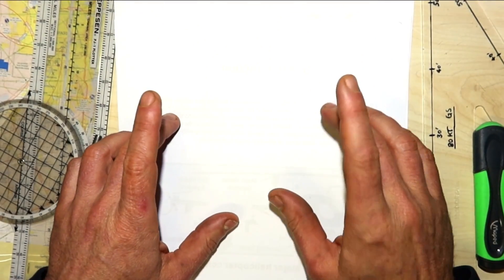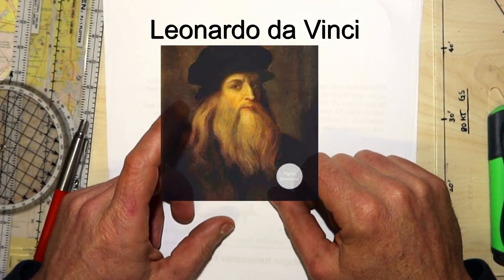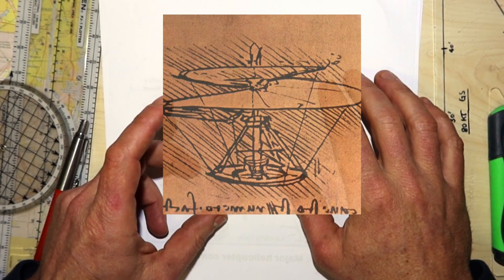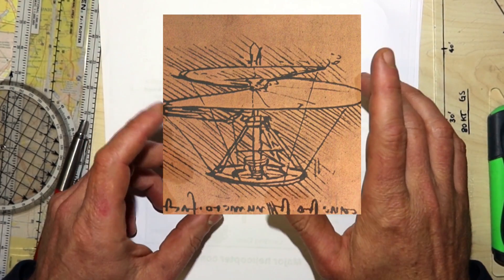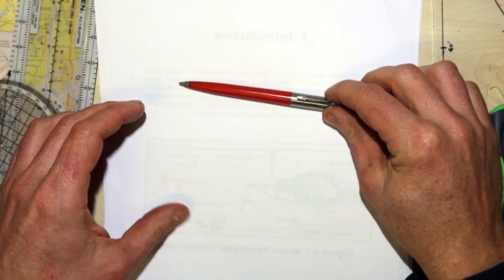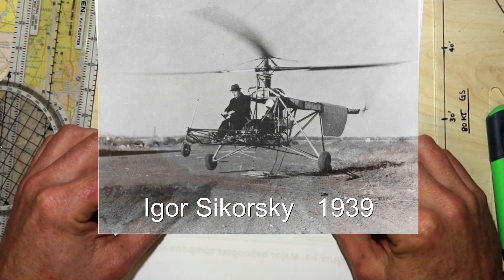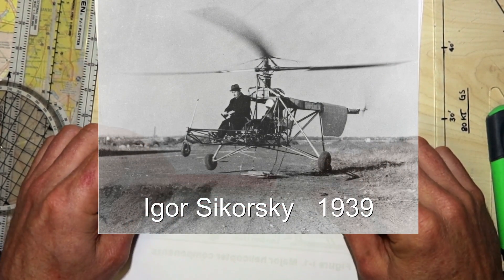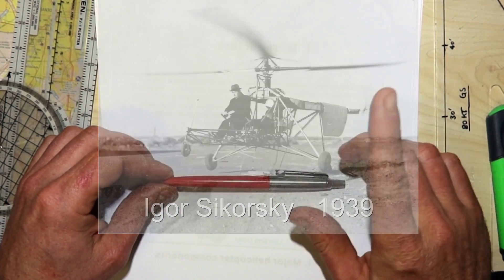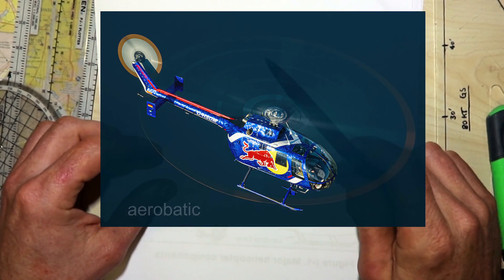500 years ago, Leonardo da Vinci conceived the idea of a vehicle with a screw-type thread on a vertical shaft that, if properly shaped and powered, would be able to take off vertically, hover and land. However, it was not until the 20th century when his idea became reality. There are many variations in the design and complexity of modern helicopters.